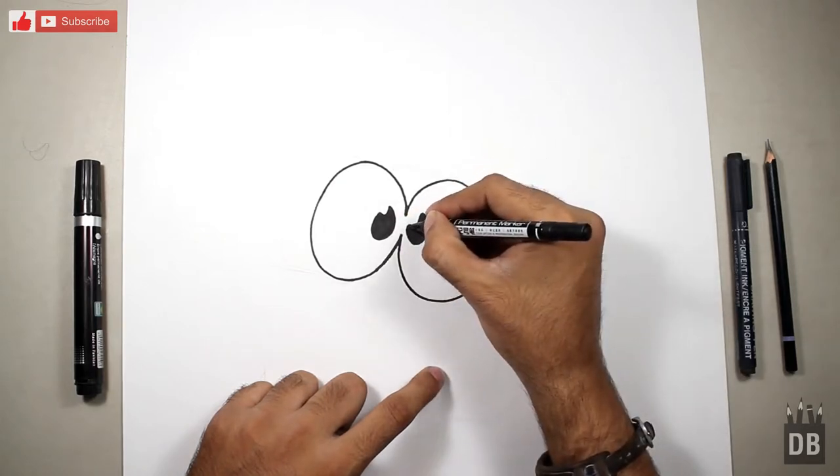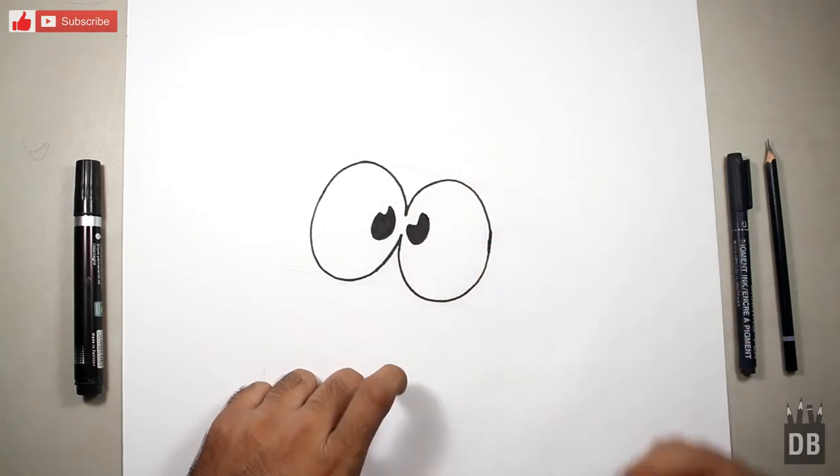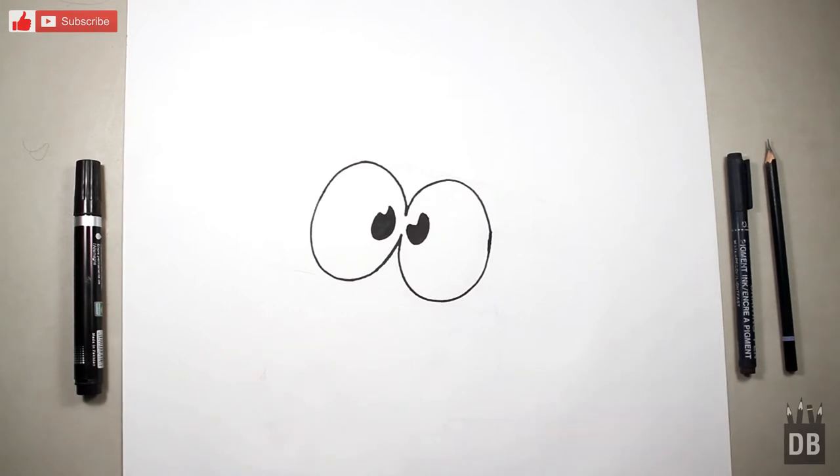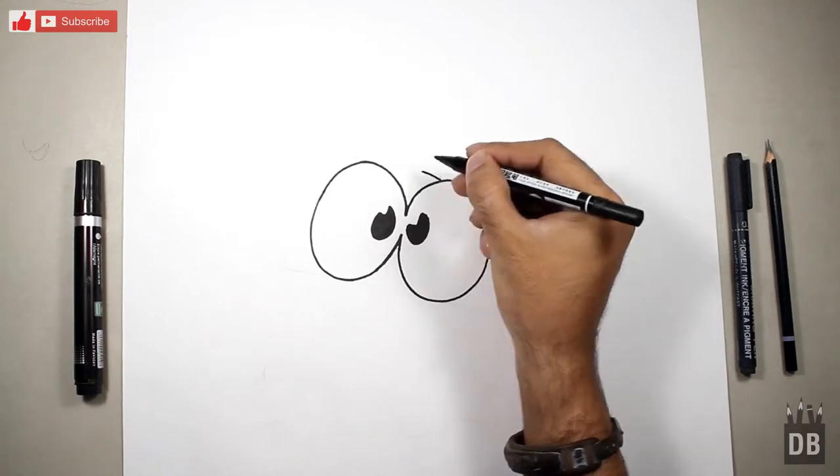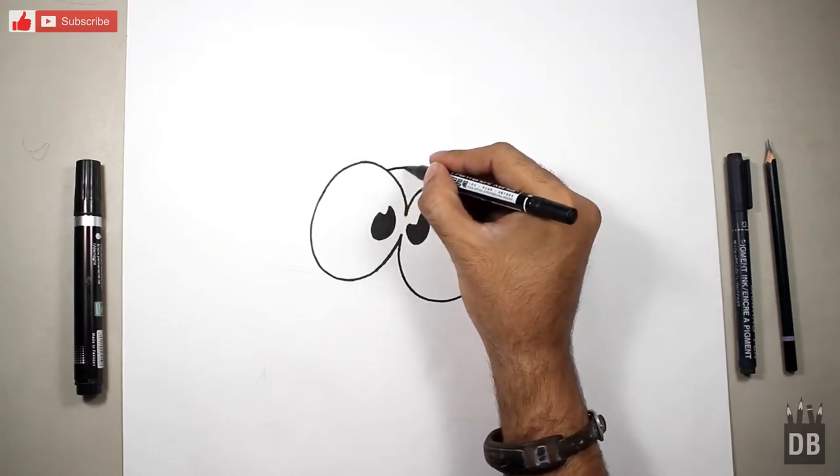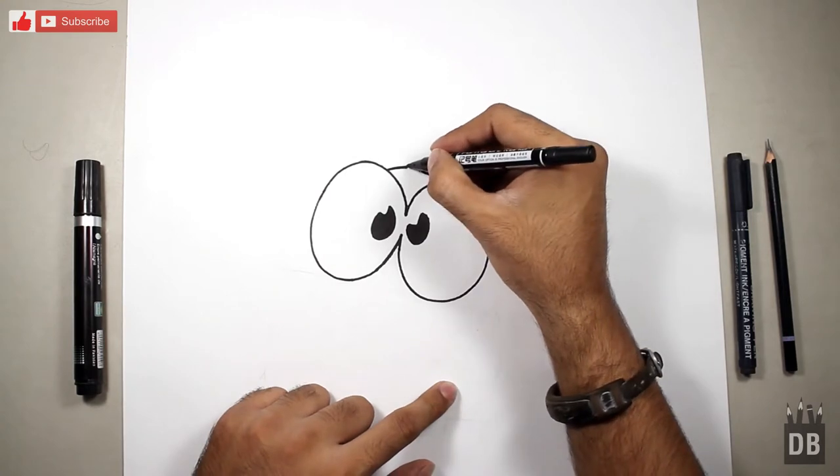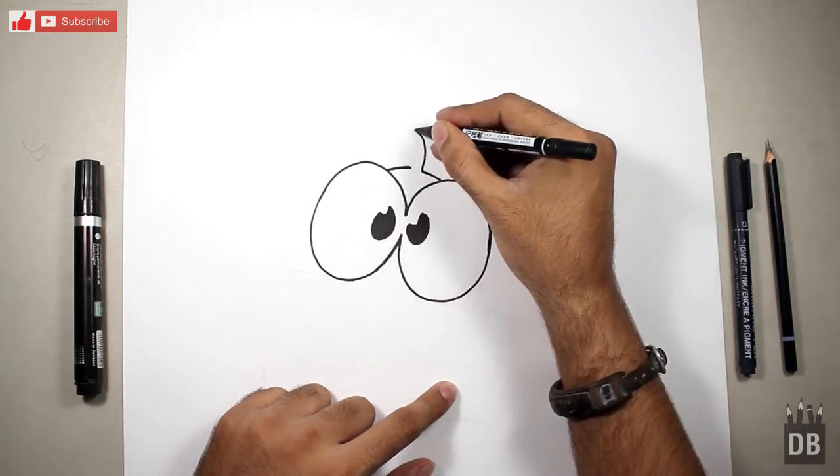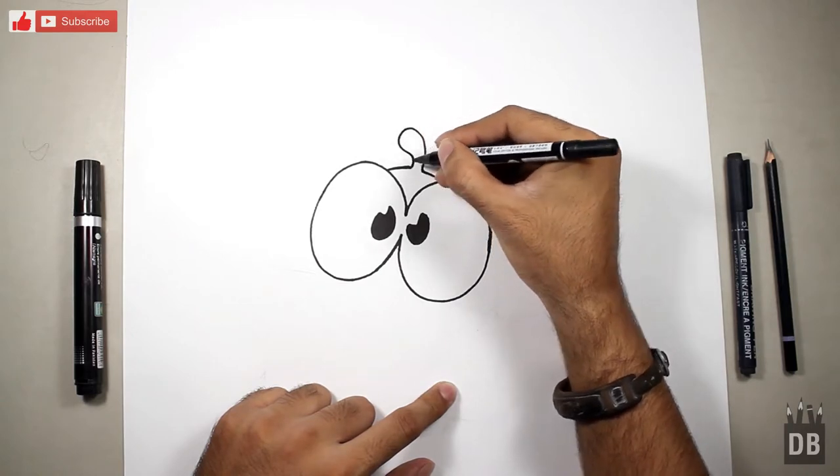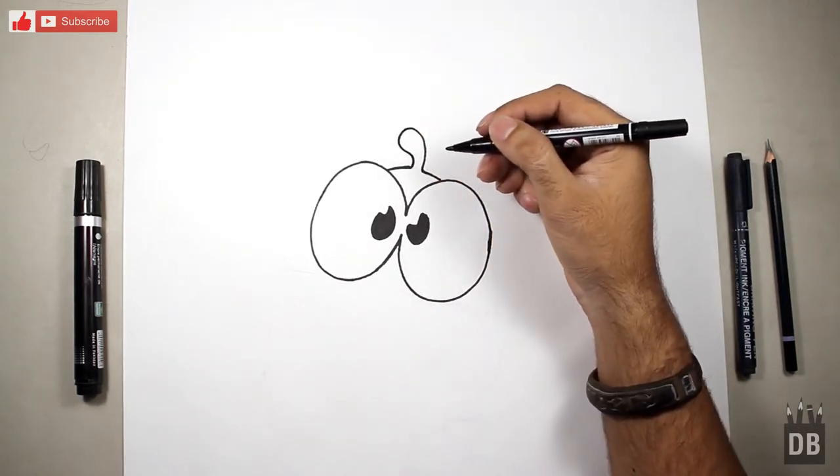The eyes of Om Nom are ready. Now we are going to make the head. Just you have to make a line like this. Just leave the gap between two lines. We have to make this head. It's like oval.